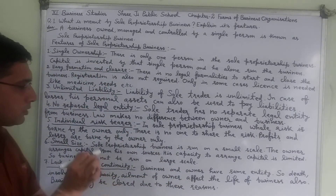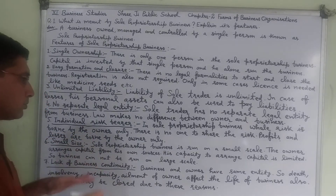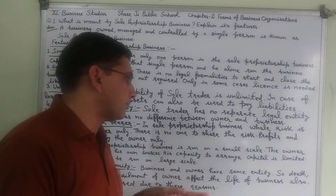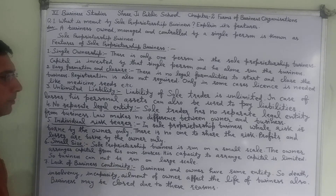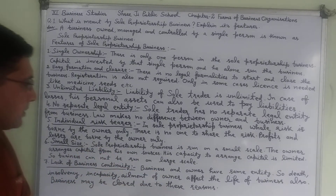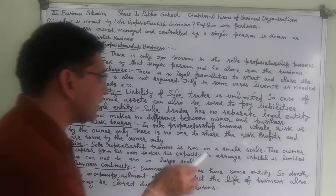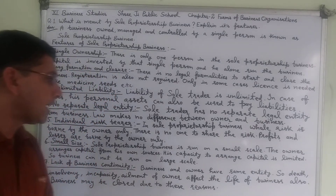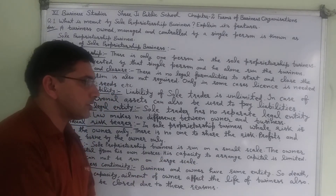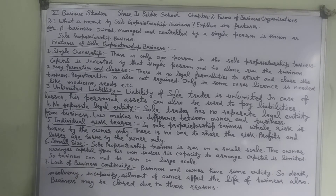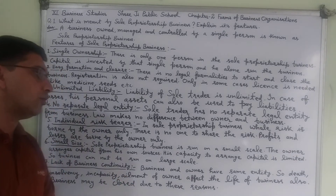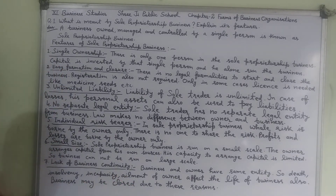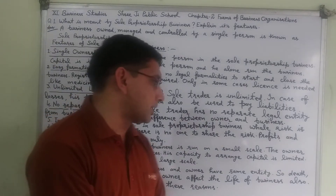Generally, the sole proprietorship is run on a small scale. The owner arranges capital from his own sources, and his capacity to arrange capital is limited. So the business cannot be run on a large scale.